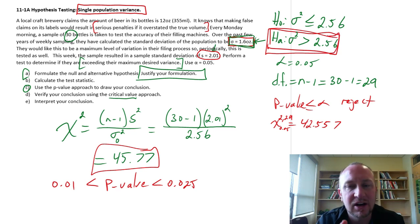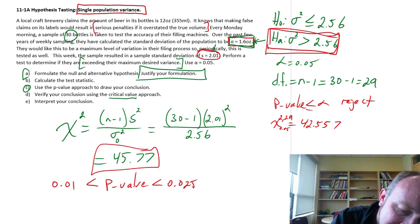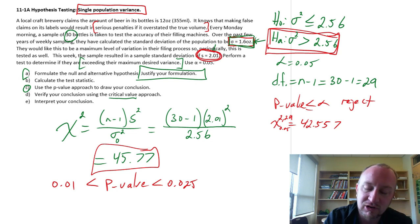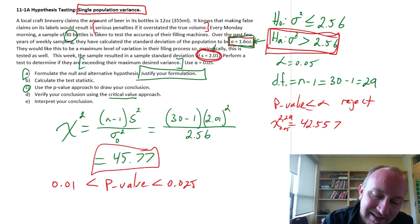So again, we get all the same conclusions using really the same rejection rules as any of the other tests that we've done. So we can reject. We do have evidence to show that a sample standard deviation of 2.01 is equivalent to a variance that exceeds our targeted variance of 2.56.